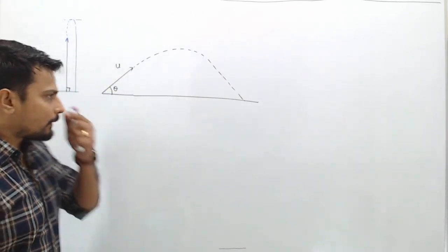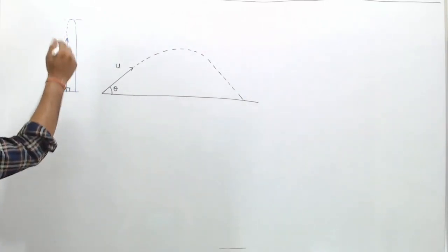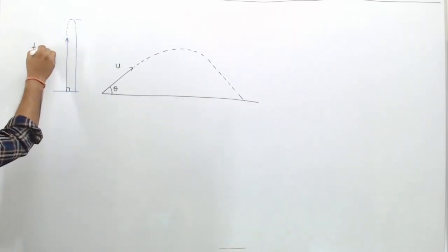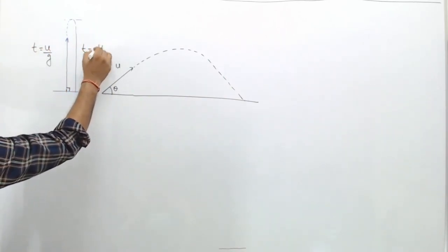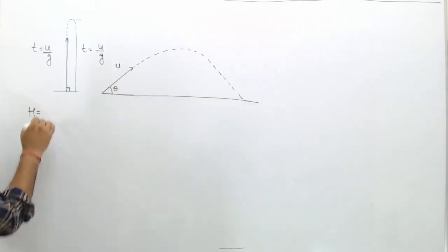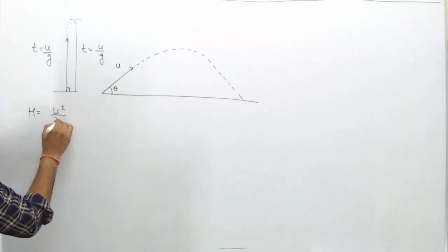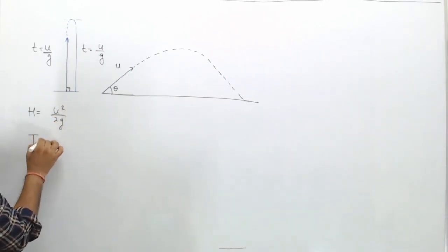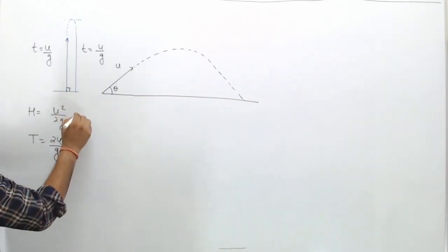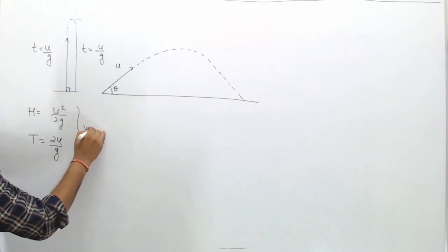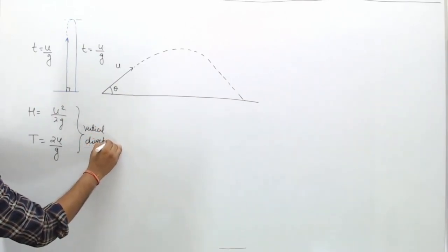When we threw it vertically upward, the time to go up was u/g and time to come back was also u/g. The maximum height was u²/2g and the total time of flight was 2u/g. This was the motion in the vertical direction.